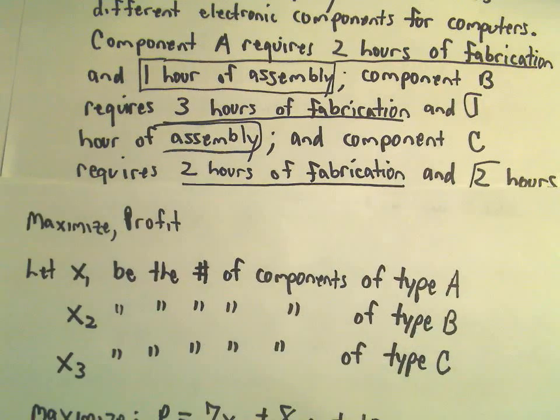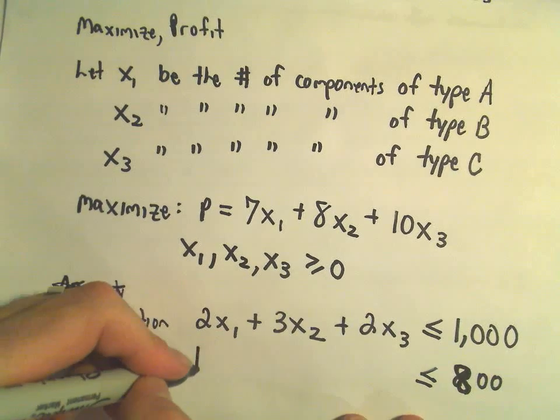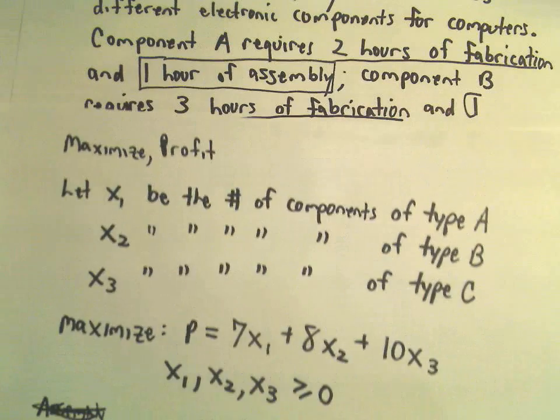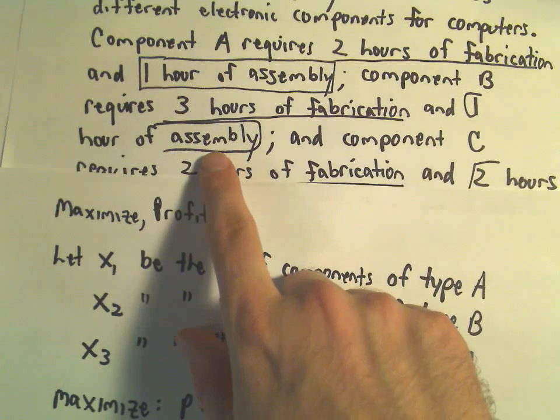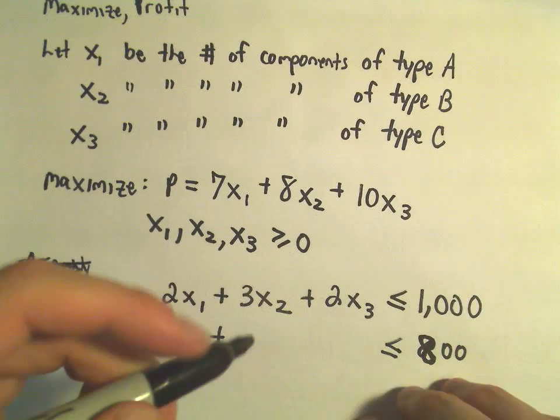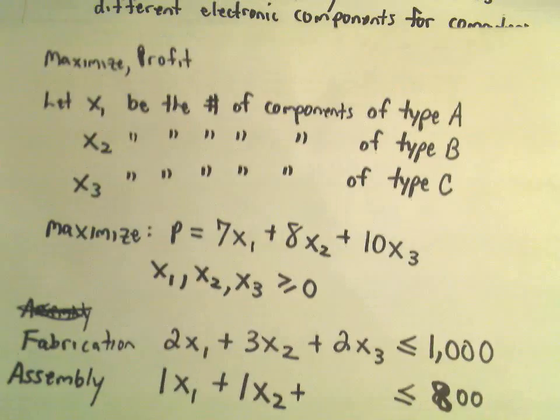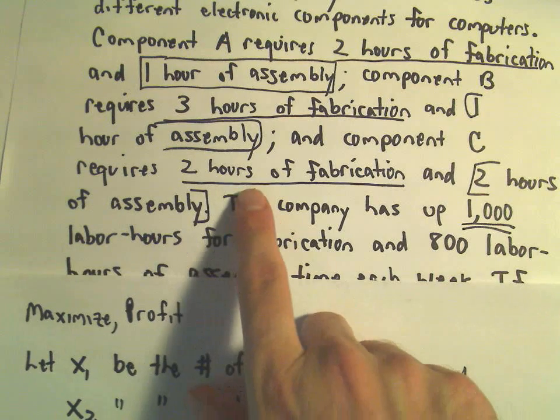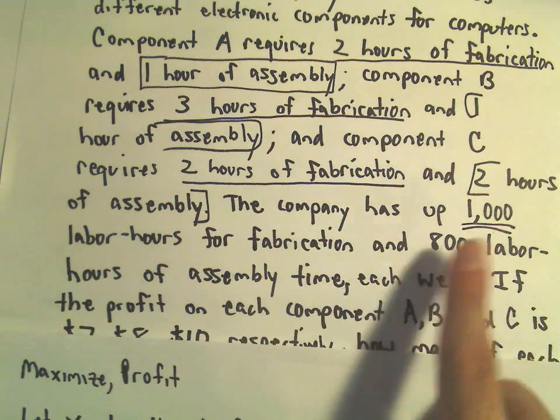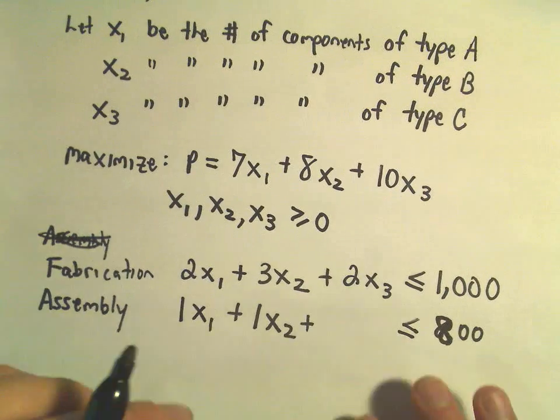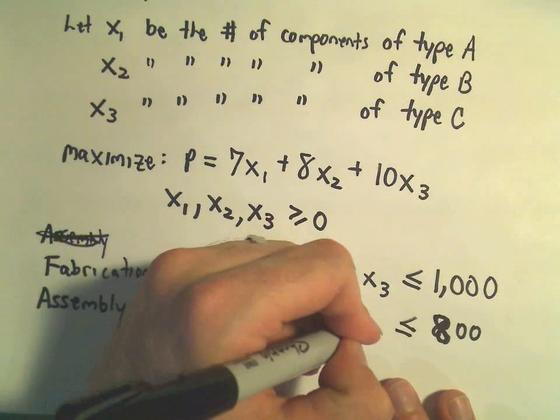We'll have 1 hour per each one of component type A. It takes 1 hour for each type of component B, so 1 times x₂. And it takes 2 hours of assembly for component C, so 2 times x₃. This is now my equation and inequalities that I'm going to use to set up the simplex tableau.